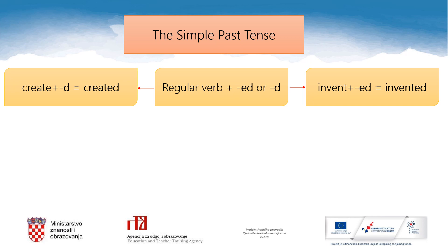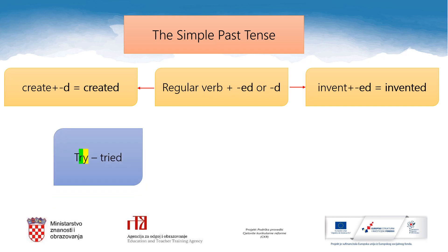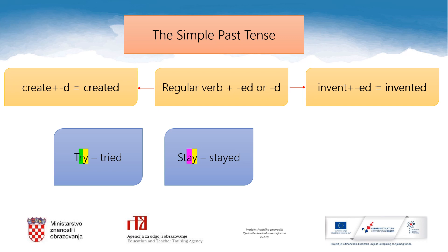Trebamo istaknuti i neka pravila pisanja glagola koji imaju nastavak -ed. Kada jednosložan glagol završava -y, a pored njega se nalazi zatvornik, tada se -y mijenja u -i i dodaje se nastavak -ed: try → tried. Kada jednosložan glagol završava -y i pored njega se nalazi otvornik, -y se ne mijenja, doda se nastavak -ed: stay → stayed. Kada jednosložan glagol završava zatvornikom a pored njega se nalazi otvornik, zatvornik se podvostručava: stop → stopped.